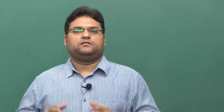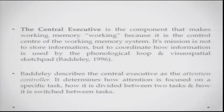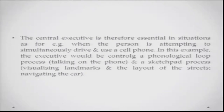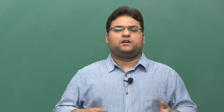Coming to the central executive: it is the component that makes working memory actually 'work' — the control center of the working memory system. Its mission is not to store information but to coordinate how information is used by the two working components. Baddeley describes it as the attentional controller, determining how attention is focused on a specific task and how it is divided between tasks depending on demand and difficulty. For instance, if someone simultaneously drives and uses a cell phone, the central executive controls the phonological loop for the phone conversation and the sketchpad for navigation.